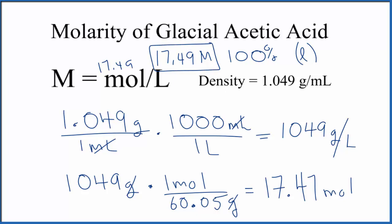If we had something like 99.5%, you could multiply 0.995 times the density 1.049, and that will give you the grams of acetic acid for that.